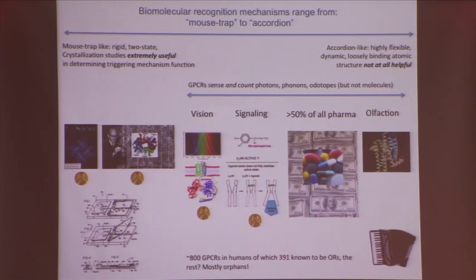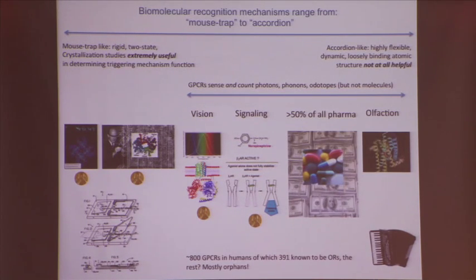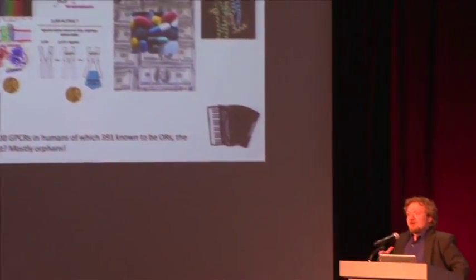Nobel prizes were given for the mousetrap end of the spectrum, and correctly so. A poster child is the potassium channel — very tight and very mousetrap-like. Another good example is hemoglobin: knowing the atomic structure of hemoglobin to atomic precision explains the mechanism of how it works to transport oxygen very well. And then we go to rhodopsin.